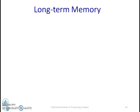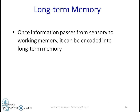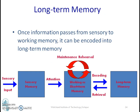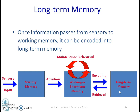Long-term memory is an unlimited capacity store that can hold information over a long period of time. Once information passes from sensory to working memory, it can be encoded into long-term memory. If you are attentive in sessions, you pass information to working memory, and through repetition, short-term memory is converted into long-term memory. For example, if asked to recite the 'Twinkle Twinkle Little Star' poem, most of you can do it — because since childhood you have done repetitions many times. You are able to retrieve it because it is permanent storage.